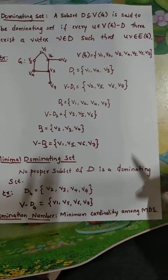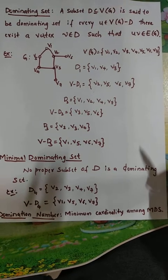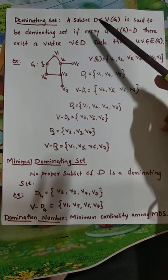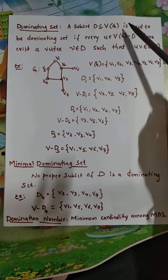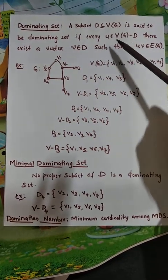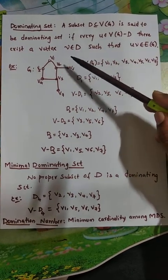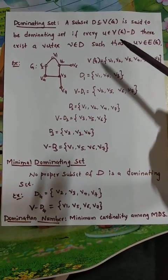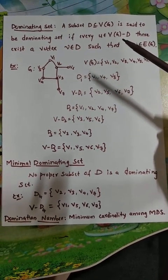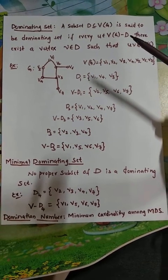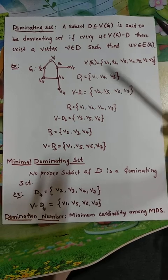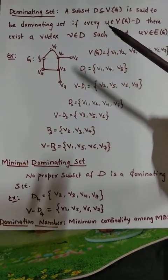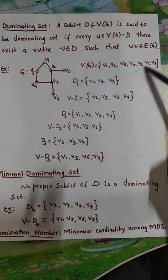Good morning students. Today we shall discuss about dominating sets. A subset D of a vertex set is said to be a dominating set if for every vertex in V minus D, there exists a vertex V belonging to D such that there is at least one edge between a vertex from D and a vertex from V minus D. For example, consider graph G containing seven vertices V1 to V7.